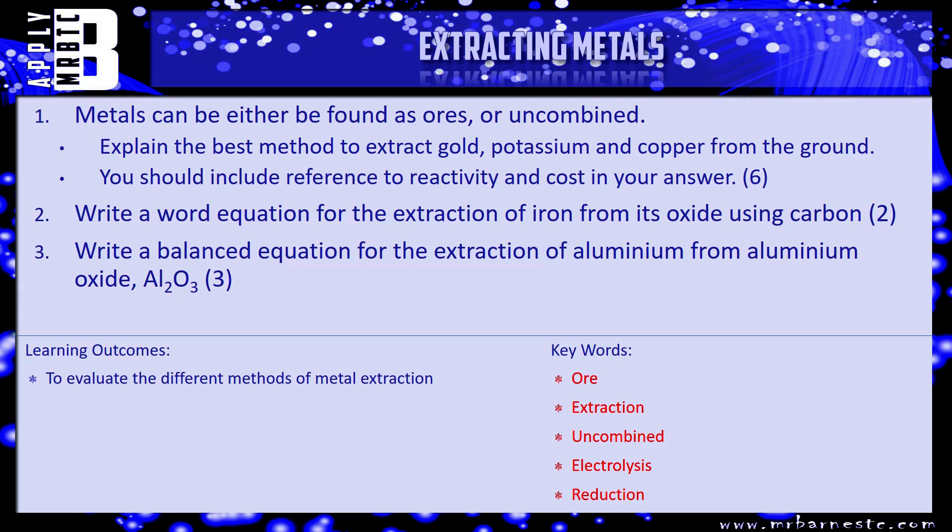Question two, write the word equation for the extraction of iron from oxide using carbon. That's worth two marks, one mark for the reactants, one mark for the products. And then, number three, write a balanced equation for the extraction of aluminum from aluminum oxide, Al2O3. That's worth three marks, one for the reactants, one for the products, one for the balancing. Pause the video and have a go now.